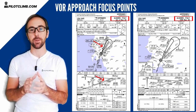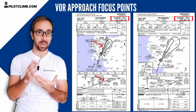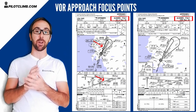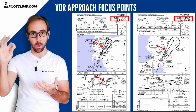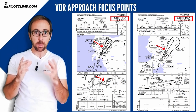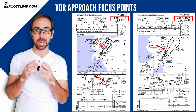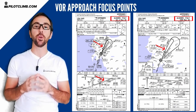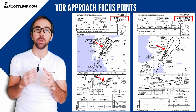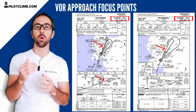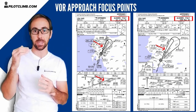On the VOR approach, on the other hand, you're going to have lateral guidance, which is a radial that comes out of the VOR, but you will not have vertical guidance. So you will not have any glideslope that will tell you at all times if you are slightly above or slightly below.